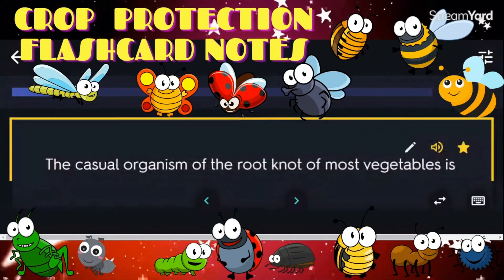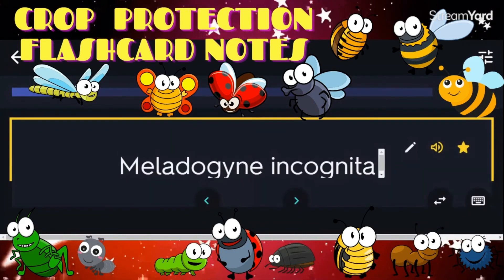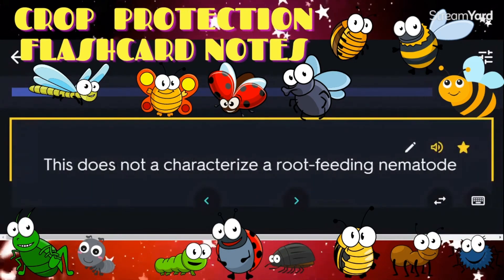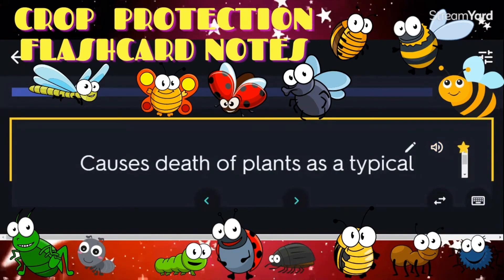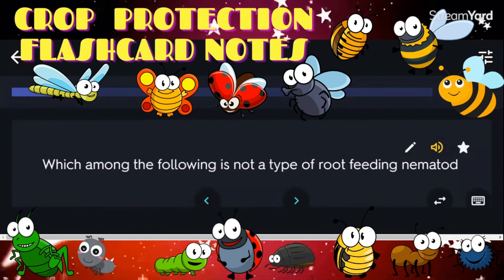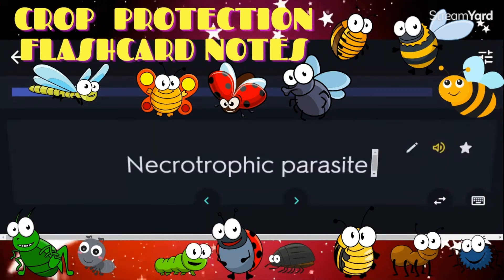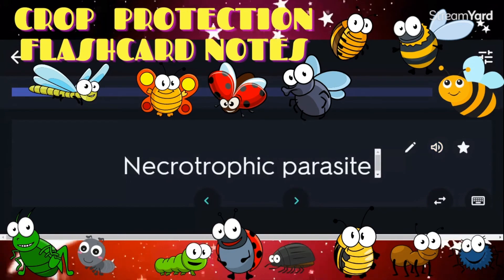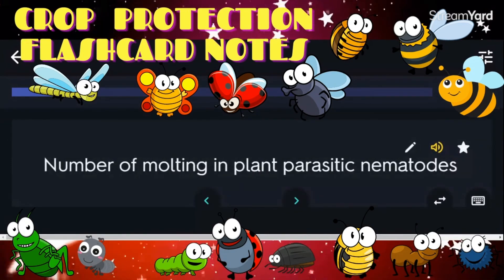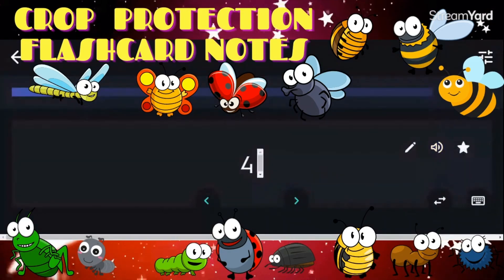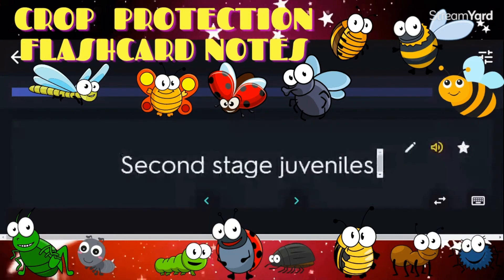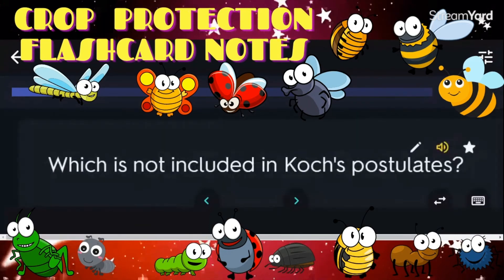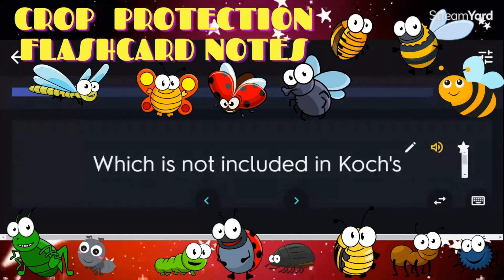The casual organism of the root knot of most vegetables is Meloidogyne incognita. This does not characterize a root-feeding nematode: causes death of plants as a typical symptom. Which is not a type of root-feeding nematode? Necrotrophic parasite. Number of molting in plant parasitic nematodes: four. The infective stage of root knot nematode is the second-stage juvenile. Which is not included in Koch's postulates: colonization.